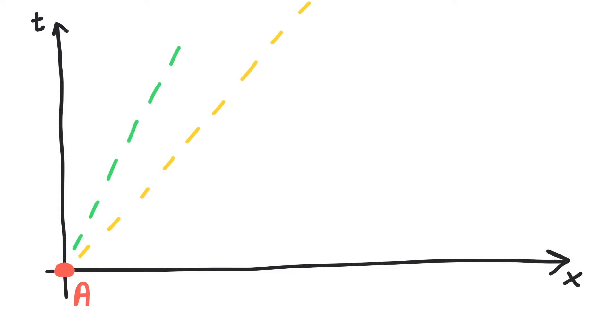If A sends out a slower signal, like an acoustic signal propagating with the speed of sound, A can have an effect on those events that lie on this worldline, like B here. This goes for all possible, that is, allowed velocities.